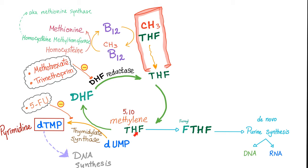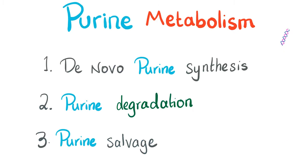The same THF can go into another path: formyl-THF. Formyl-THF will help you make de novo purine synthesis, and of course purines are needed for DNA and RNA. All of this was an introduction — now let's start talking about de novo purine synthesis.